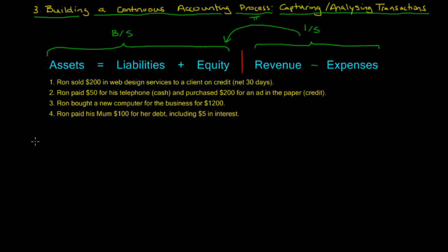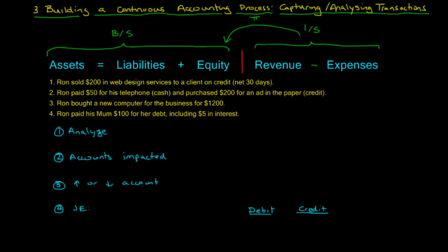Let's take a look at each one of these transactions to see how we would record them. Starting with the first transaction: Ron sold $200 in web design services to a client on credit, net 30 days. This means we had a sale during the month, so it affects revenue. In terms of which accounts were impacted, we definitely have an impacted sale.